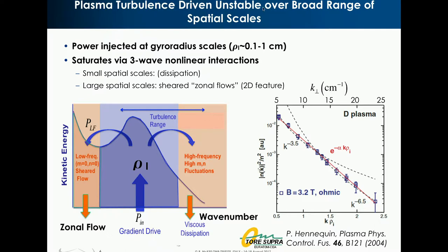The basic nature of this turbulence is similar to turbulence in any system: you have some driving scale, and in this case energy goes in at around the ion gyro radius, which for a typical magnetically confined plasma can be on the order of several millimeters. That energy gets dissipated through a standard forward cascade to high-k dissipation regimes. But because it's largely two-dimensional, you also have an inverse cascade to low wave number, ultimately leading to the development of stabilizing zonal flow phenomena. This has been observed experimentally — a wave number spectrum from the Tore Supra experiment shows a break point near the ion gyro radius.